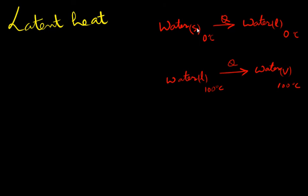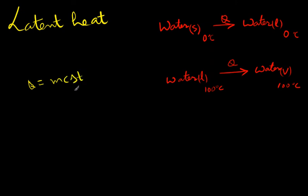Let me ask you a question. You have water in solid form — ice at zero degrees Celsius — and you have given some amount of heat. Your water in solid form got converted into liquid form at the same temperature, zero degrees Celsius. Can you tell me, using the regular formula Q = mcΔT, what is the temperature, and why there is no change in temperature? Where did this heat go?